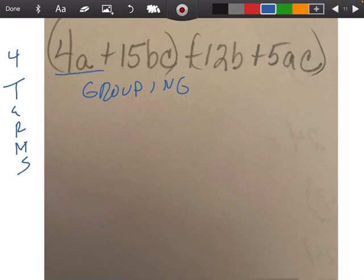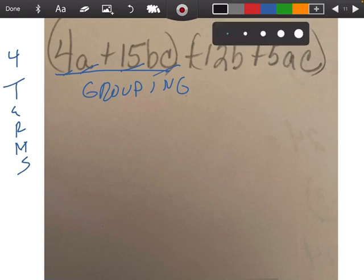So if you notice the way the problem is written, if I look at these two terms and I say 4a plus 15bc, do I have any numbers common to 4 and 15? I don't. And the variables don't have any common factors either.